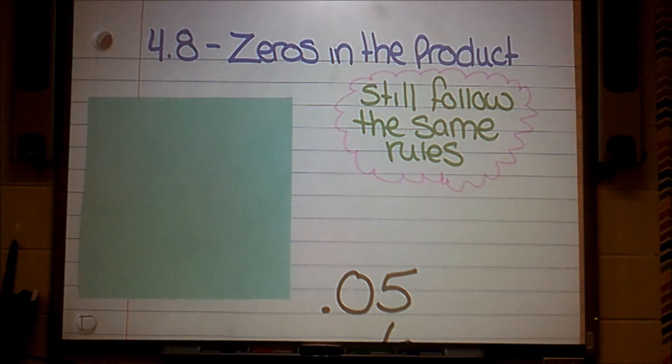We're going to change it up just a little bit and look at what our product's going to look like if we have zeros in the original problem, because it changes it quite a little bit. We're still going to follow the same rules as our floating green and pink cloud tell us there, but we're just going to make sure to follow the rules to a T.